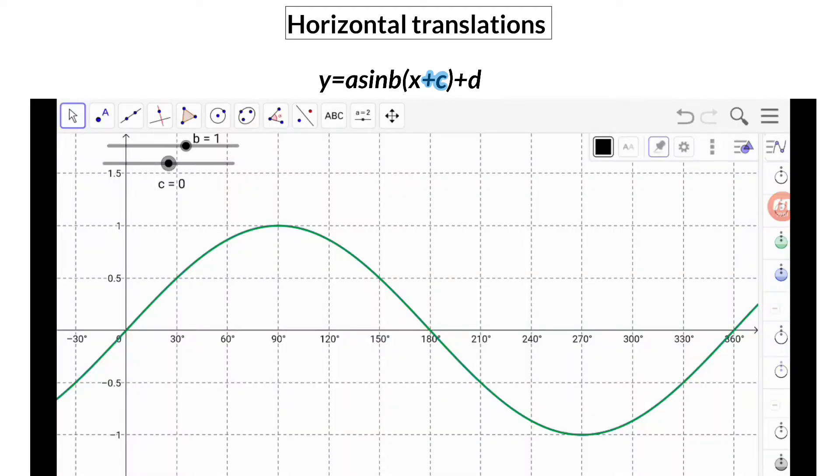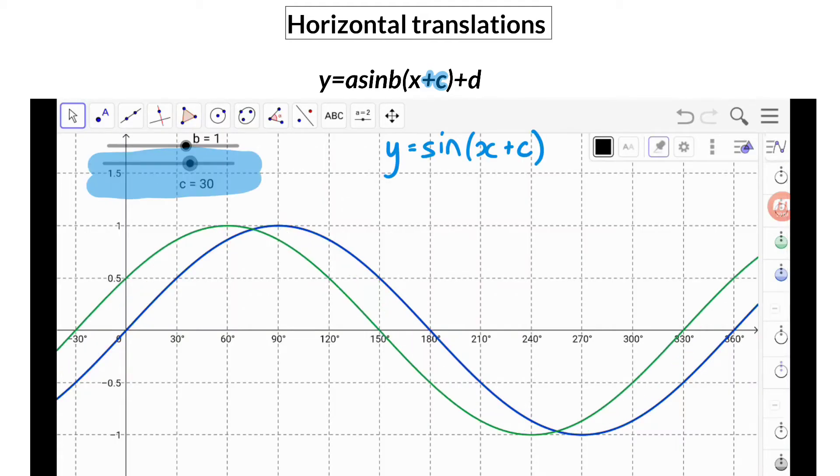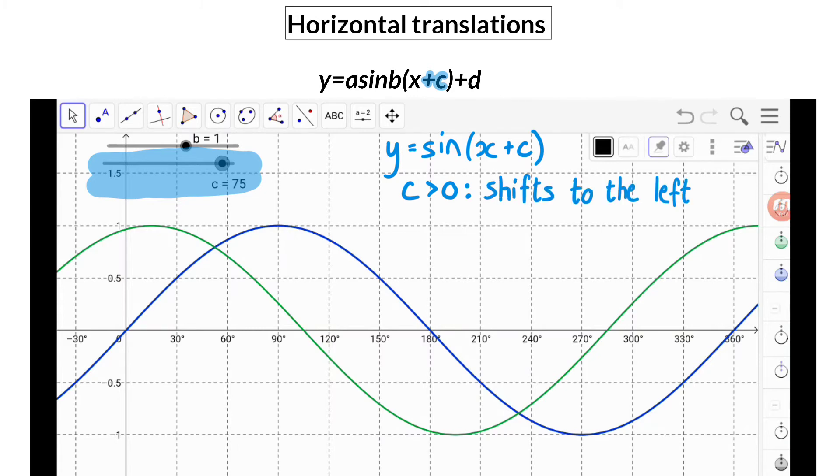Here we have the basic sin graph y equals sin x, and as soon as I add a c value you will see that the graph shifts horizontally. Here it is important to note that when the c value is positive, the graph shifts to the left in the negative direction.